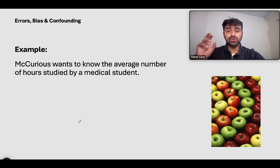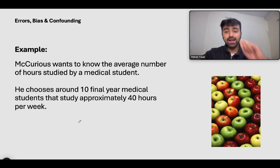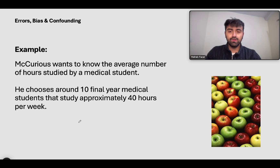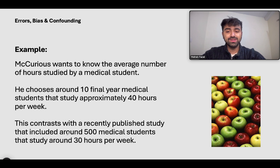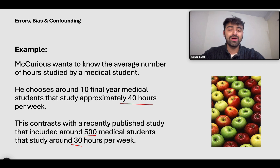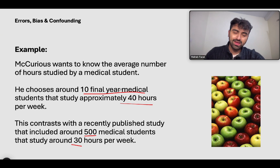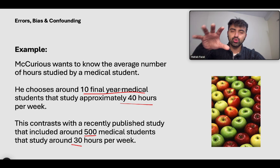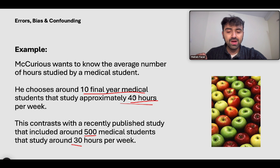Mercurius wants to know the average number of hours studied by a medical student. He chooses around 10 final year medical students that study approximately 40 hours per week. This contrasts with a recently published study that included around 500 medical students, who study around 30 hours — a 10-hour difference. His study was wrong because the people he chose do not represent all medical students. You can't just choose final year medical students to represent the whole medical school. Therefore, this study was also affected by selection bias.